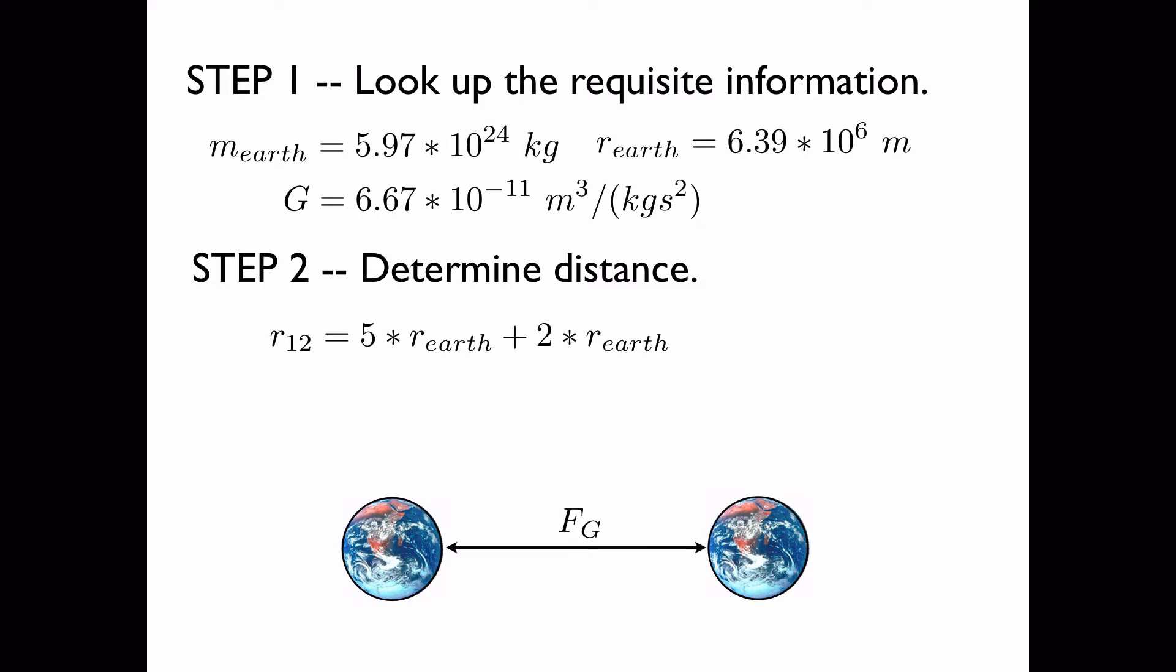However, in order to apply Newton's law of gravitation, we must have the distance as measured from the centers of the earth. So we have the distance between their surfaces, and then we must add in two earth radii to get to the center of the left one and the center of the right one. So all together, the distance is seven earth radii.